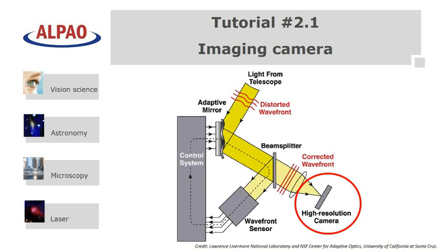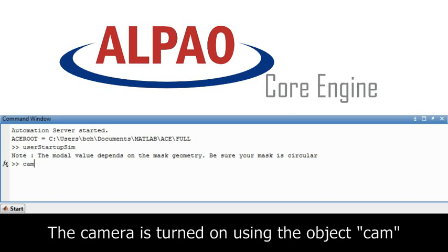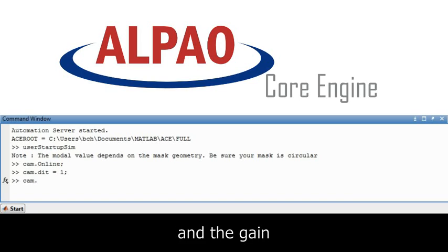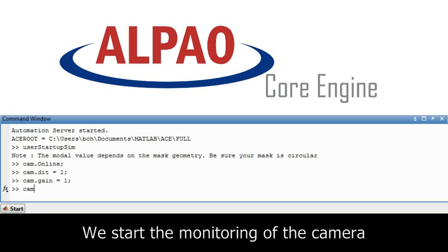Next we will introduce the camera control. The camera is initialized by using CAM and the function ONLINE. Next we set the integration time and the gain for the camera. We can monitor the camera by starting the real-time display.